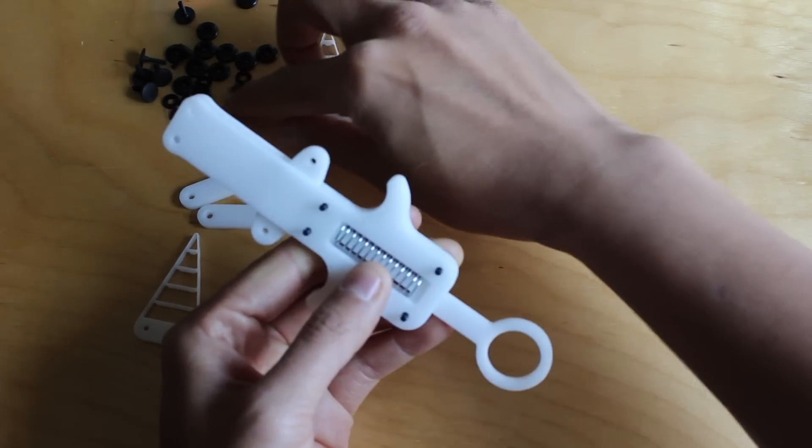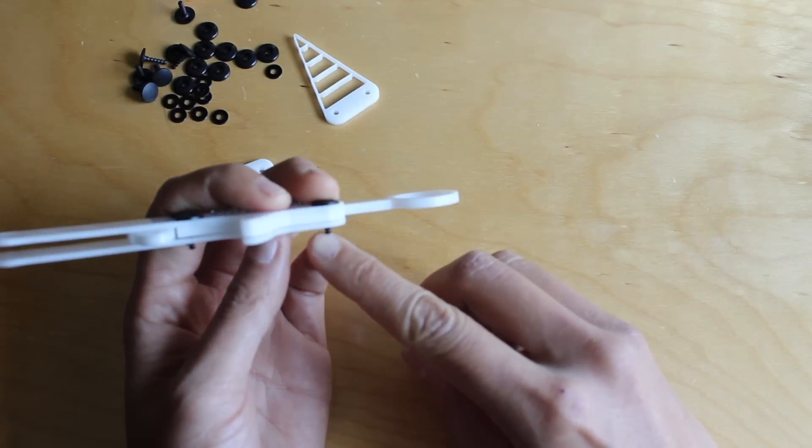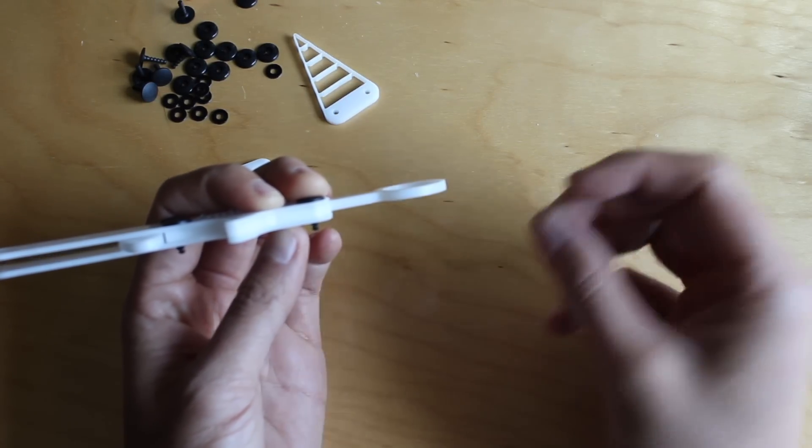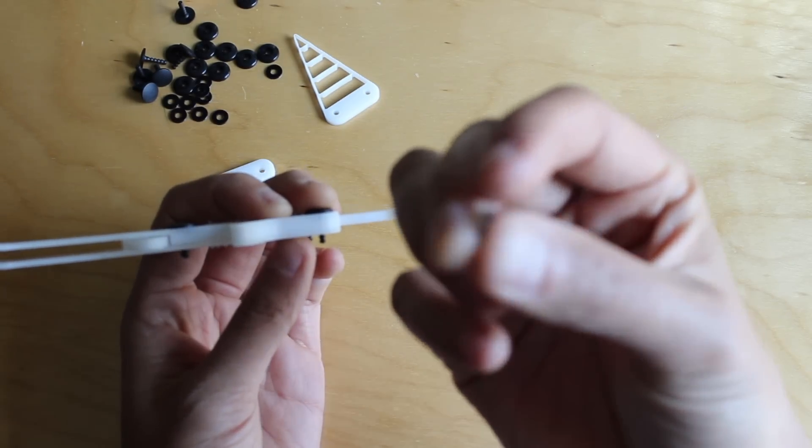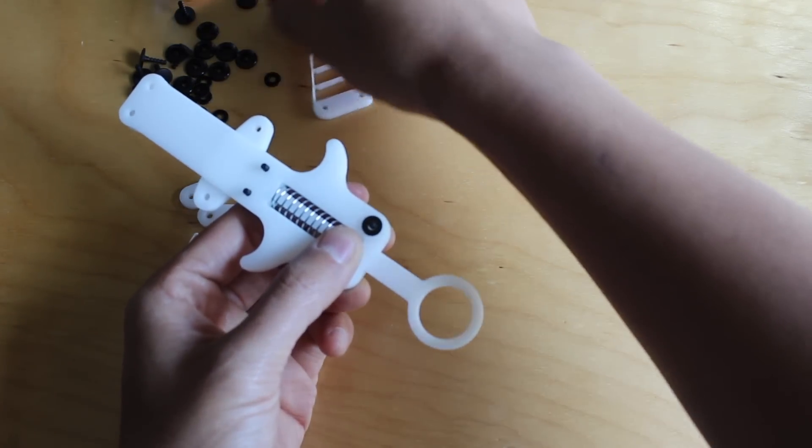And then lastly, these washers here are just used because these rivets only snap together at certain thicknesses, so this washer just helps get it to one of the snapping thicknesses.